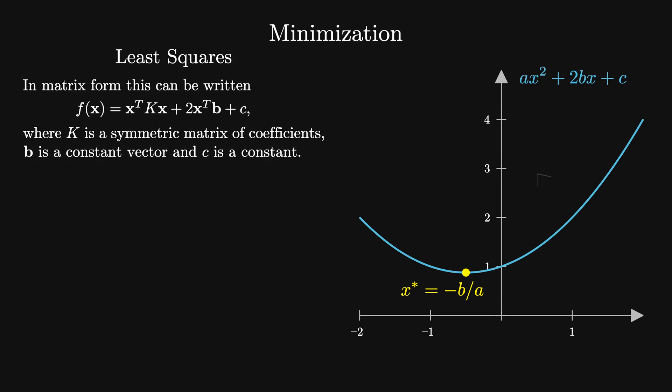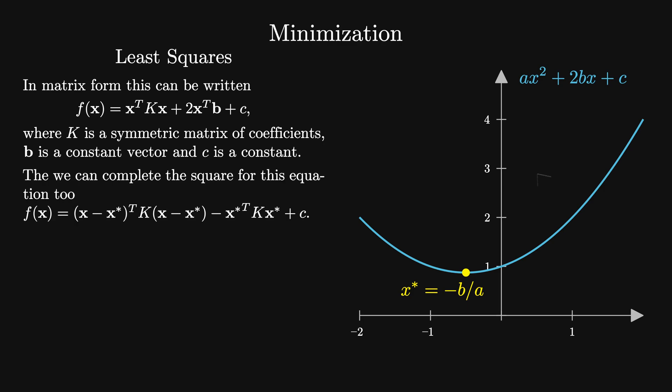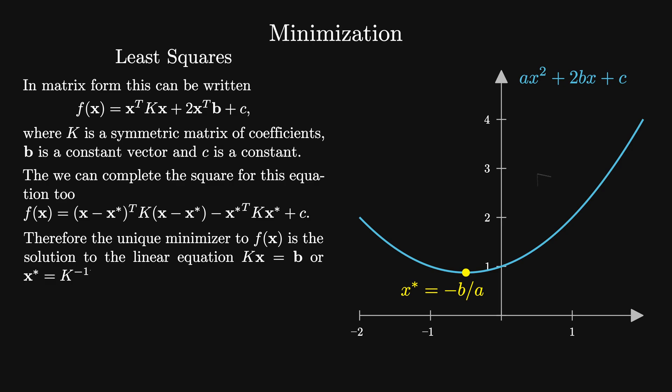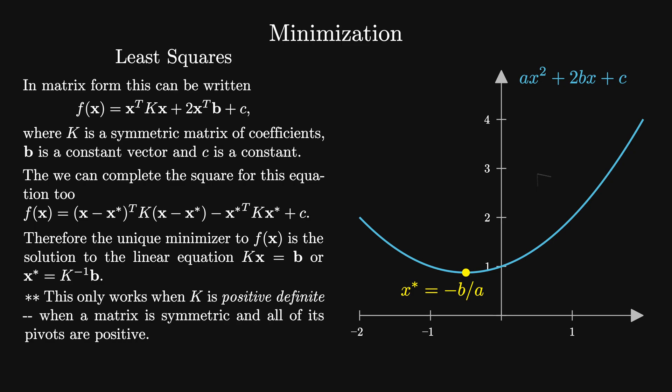Since this is a quadratic form, we can find its minimum by completing the square like we did before, which gives us f(x) equals (x minus x*)^T K(x minus x*) minus x*^T K x* plus c. You can demonstrate that the unique minimizer is a solution to the linear equation K x equals b, or equivalently x* equals K inverse b. Note that this only works when K is positive definite, which means K is a symmetric matrix and all of its pivots are positive.